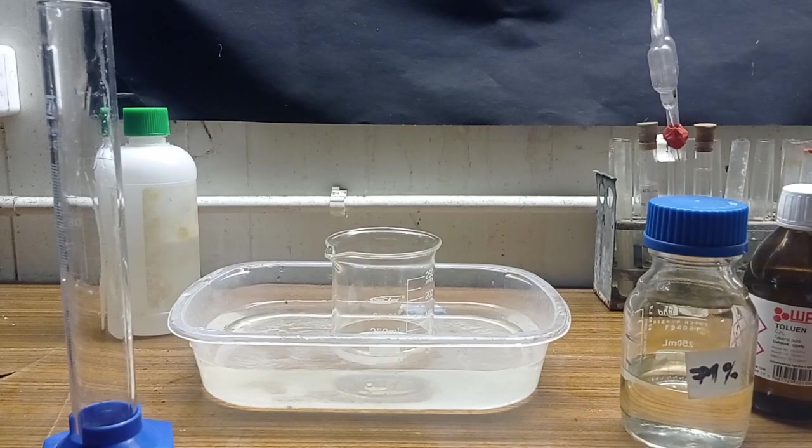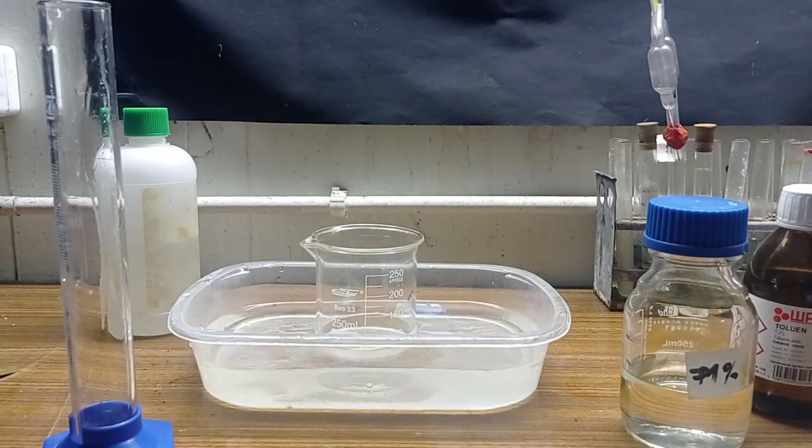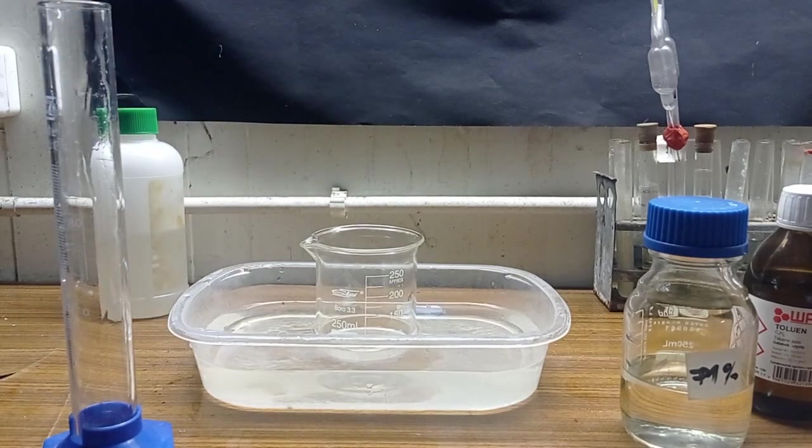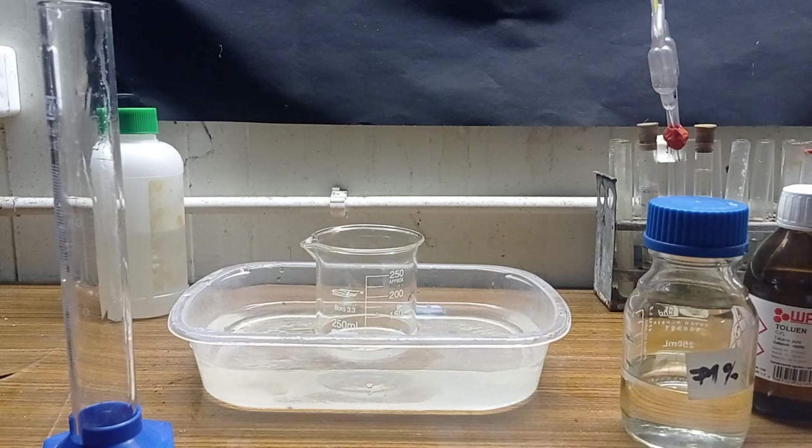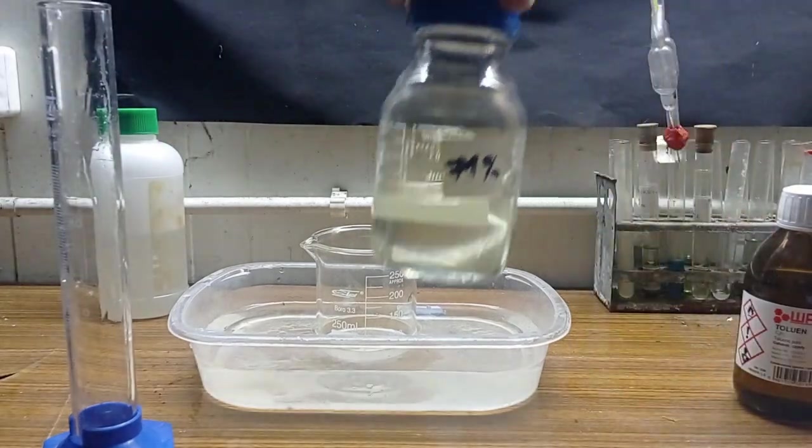So hi there, here I am, nitrating toluene. In this beaker I prepared around 42 milliliters of concentrated sulfuric acid and now I'll measure around 32 milliliters of concentrated nitric acid that I made previously.